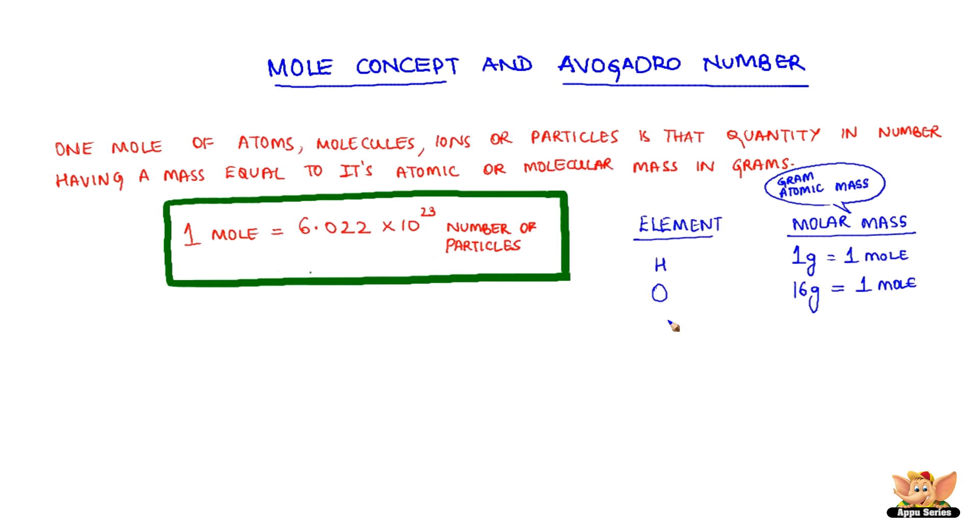How many atoms does one mole of carbon, that is 12 grams of carbon, contain? Correct! It contains 6.022 times 10 to the 23 atoms.